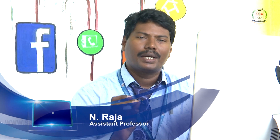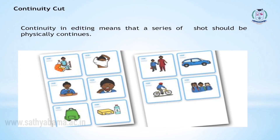There are four important video cuts. Number one is continuity. Continuity in editing means that a series of shots should be physically continuous. For example, a school boy wakes up in bed, then brushes his teeth, takes a bath, wears his uniform, takes breakfast, arranges his school bag, and comes to school. This is a continuous activity, which is why it is called a continuity cut.